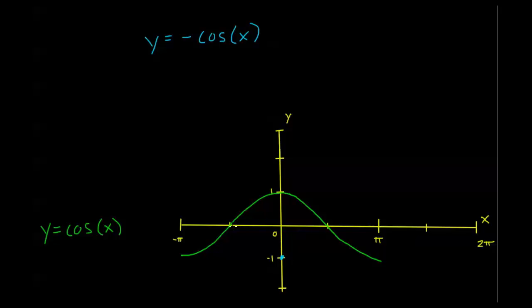If here, when x equals 0, cosine is equal to positive 1, that means that negative cosine is going to be negative 1. At these two points, negative pi over 2 and positive pi over 2, I'm at 0, so negative 0 is still 0. So my graph is going to pass through these points still. And at both negative pi and pi, my cosine is equal to negative 1, so negative cosine then is going to be equal to positive 1. Let's go ahead and fill this in.